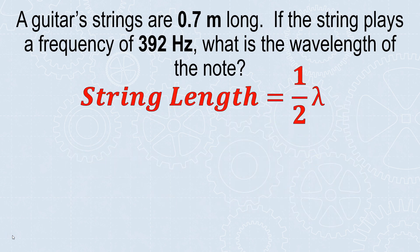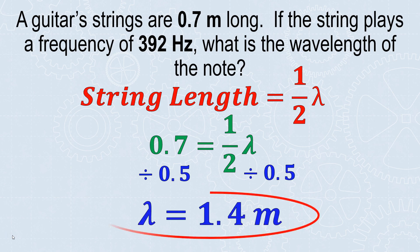The string length equals half of a wavelength. The string length is 0.7 meters. I want to know the wavelength. What's happening to my variable lambda? I'm multiplying by one-half. To undo it, I divide both sides by one-half. Remember, one-half is 0.5 as a decimal. 0.7 divided by 0.5 gives a wavelength of 1.4 meters. This is logical - the wavelength is always bigger than the string length. Half a wave fits in here, so it makes sense that the wavelength is twice as big as the string.